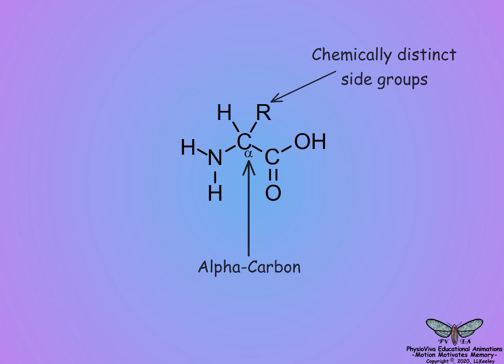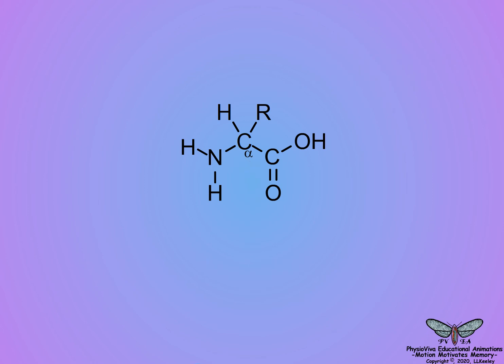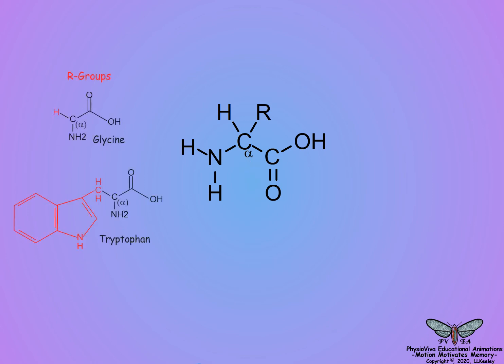And neutral or charged. As shown here, R-side groups can be simple, such as the hydrogen of glycine, or complex like the aromatic rings of tryptophan.